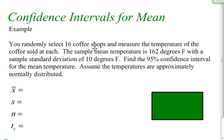You randomly select 16 coffee shops and measure the temperature of the coffee sold at each. The sample mean temperature is 162 degrees Fahrenheit with a sample standard deviation of 10 degrees Fahrenheit. Find the 95% confidence interval for the mean temperature. Assume the temperatures are approximately normally distributed.